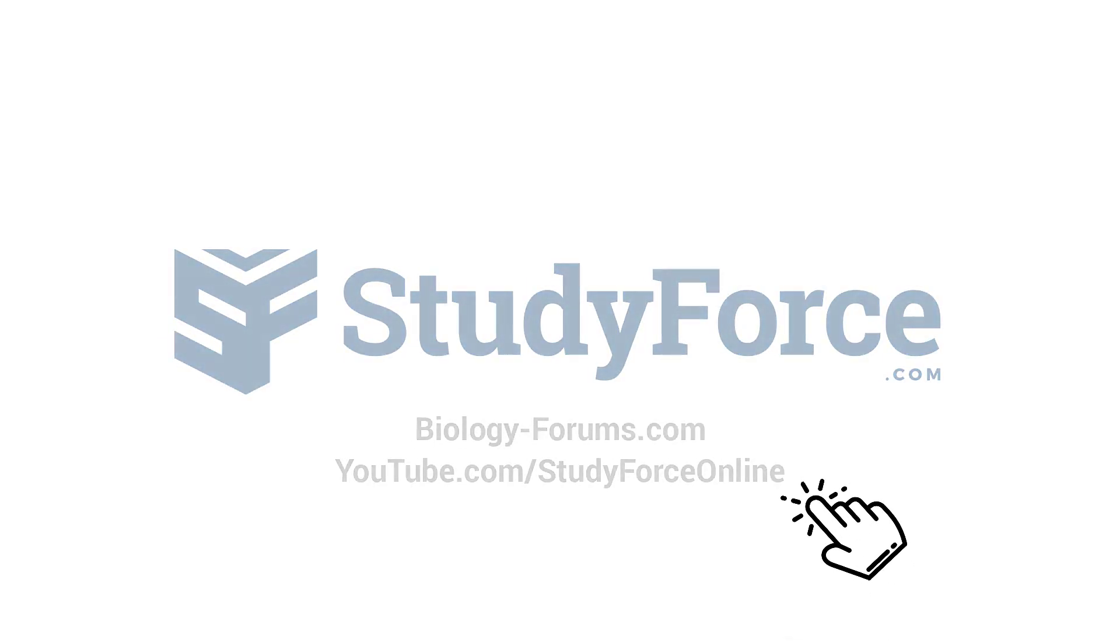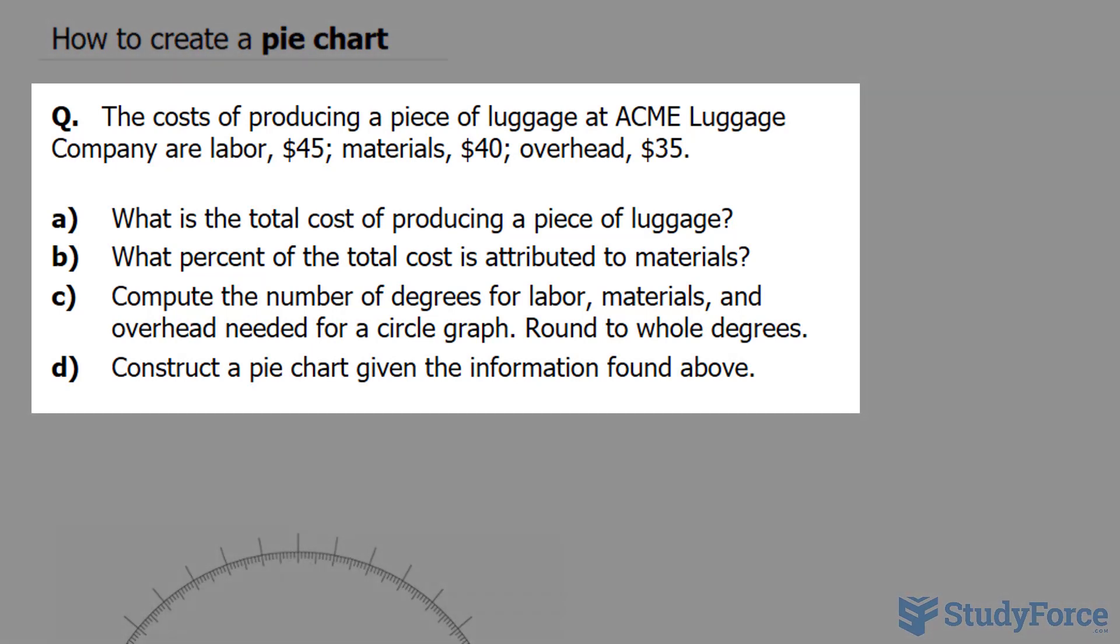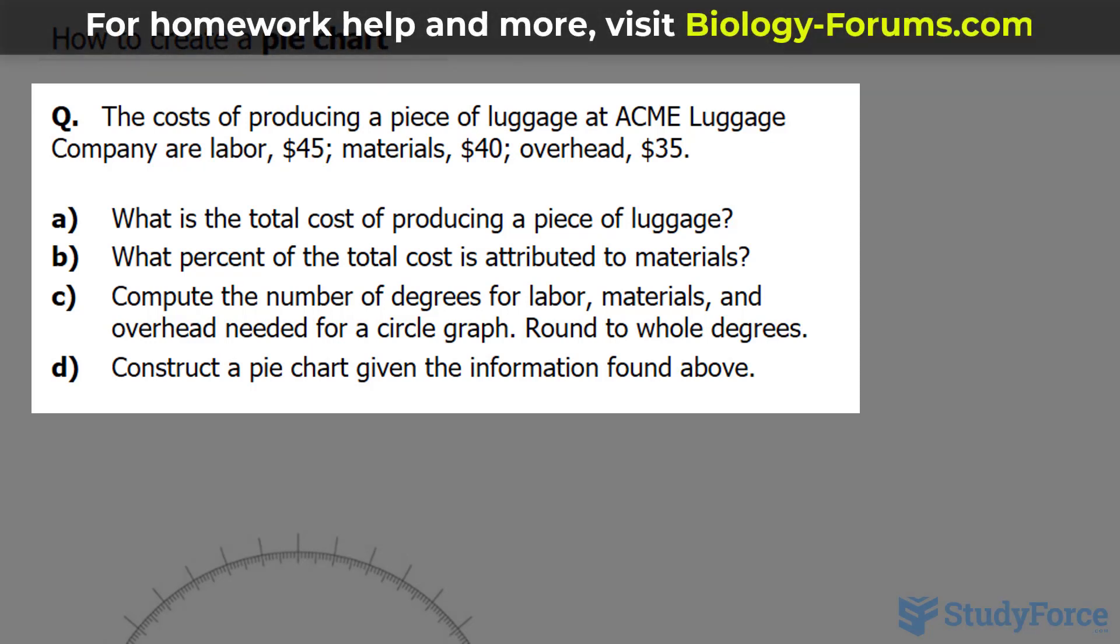In this lesson, I'll show you how to manually create a pie chart, and we'll be doing this by answering a question. The question reads: the cost of producing a piece of luggage at ACME Luggage Company are labor, which is $45, materials, $40, and overhead, $35.